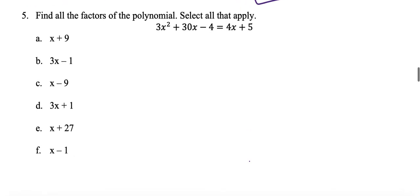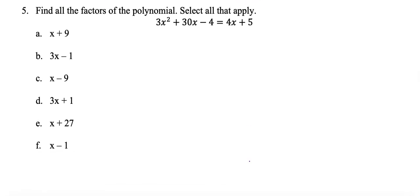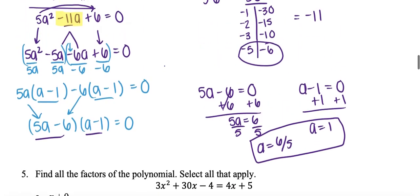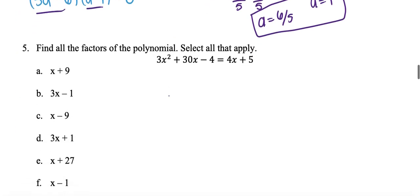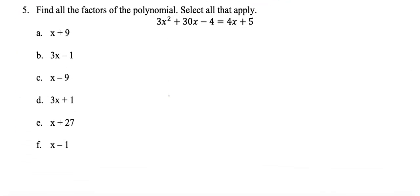Another way that problem may come up on your test is in this where you select all that apply. This one says to find all the factors of the polynomial, select all that apply. Just like this top one where we couldn't factor it yet because they weren't all on the same side, the same thing is happening here.